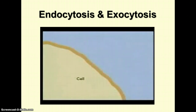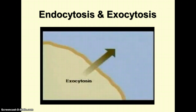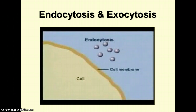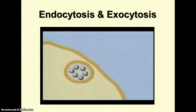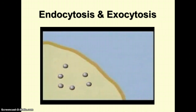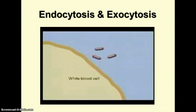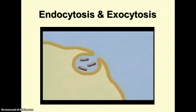Cells can move large particles across the membrane by bulk transport. Bulk transport into the cell is called endocytosis; bulk transport out of the cell is called exocytosis. During endocytosis, the cell membrane folds into a pouch surrounding particles outside the cell, and a vesicle is formed. This vesicle carries the particles into the cell and can release its contents into the cytoplasm. Human white blood cells engulf bacteria and other unwanted cells — this process is called phagocytosis, which is another example of endocytosis.